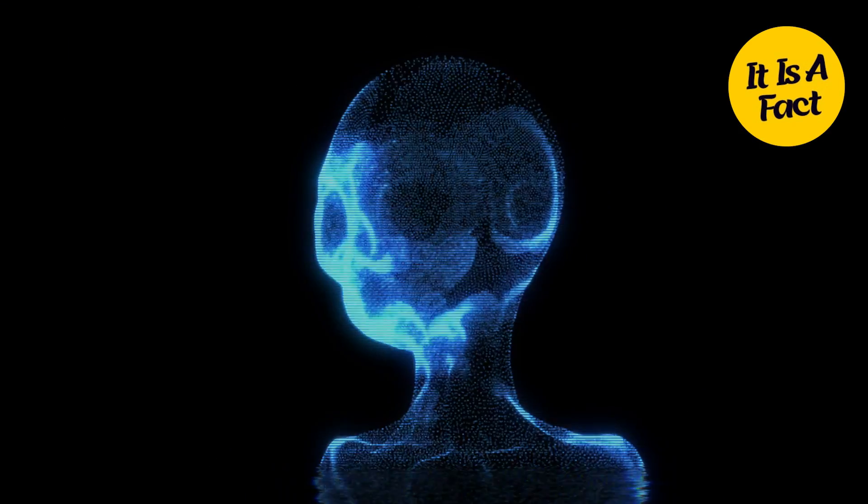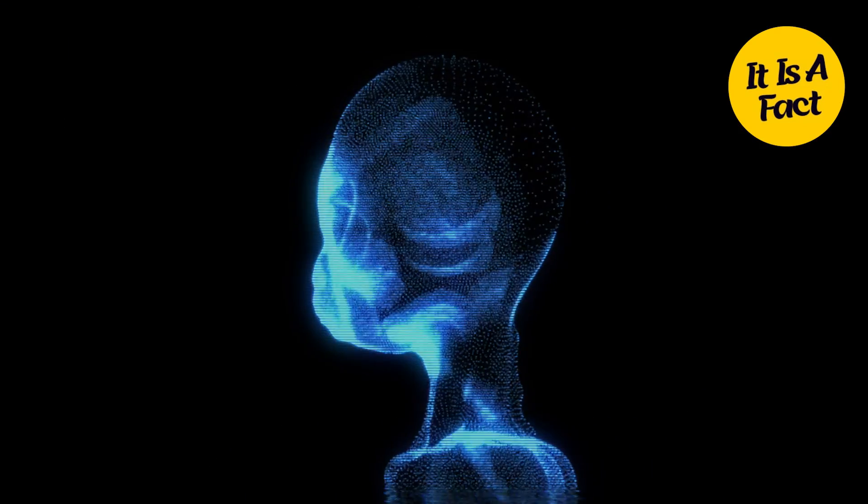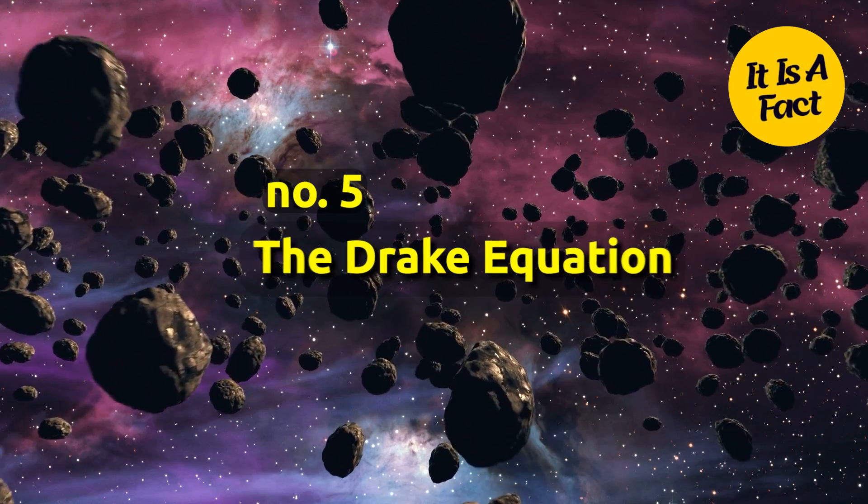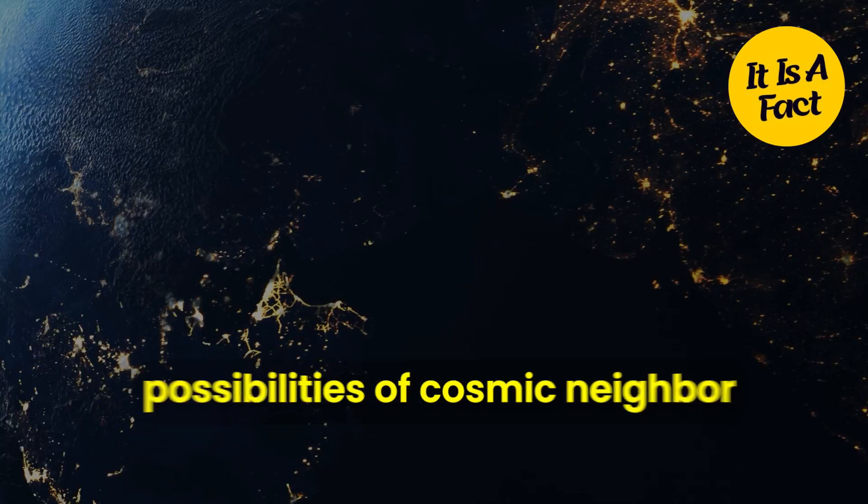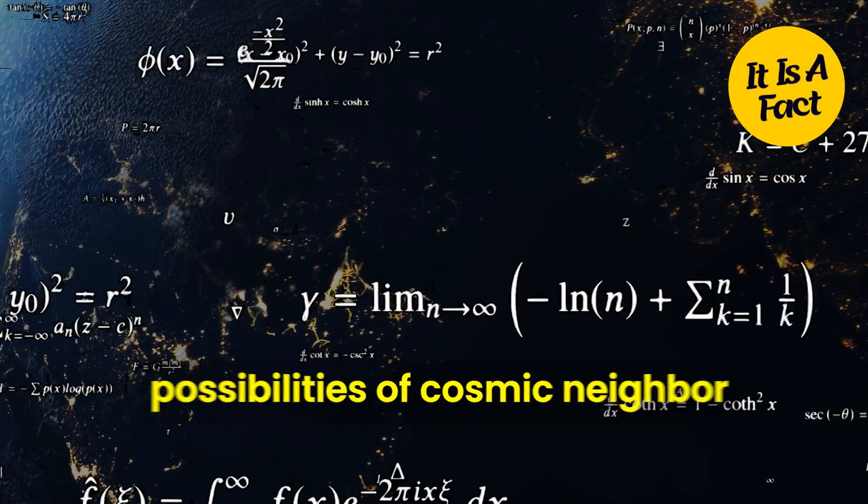Unlock the mysteries of extraterrestrial civilizations with theory number 5, the Drake Equation. How many intelligent alien species inhabit our galaxy? This equation is a window into the possibilities of cosmic neighbors.